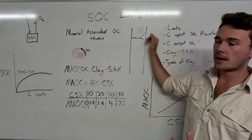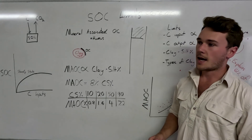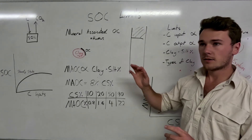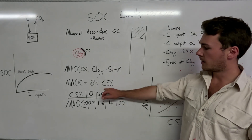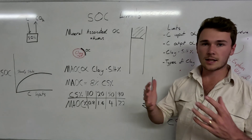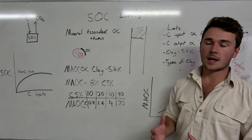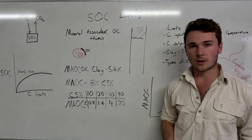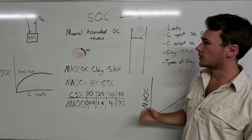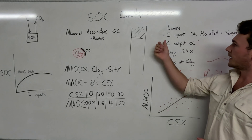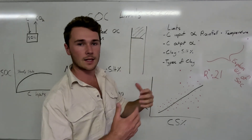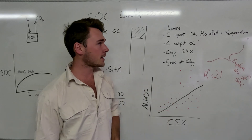Does it really matter if we max out the top layer when we have this capacity to sequester carbon deeper into the soil? We are limited by the actual soil organic carbon we can fix — roughly 8% of clay and silt content as a rule of thumb — but also by depth, which is limited by how deep roots go. By improving soil structure and airflow into deeper parts of the soil using cover crops and better microbial management, we can sequester more carbon lower into the profile. Carbon inputs are also limited by rainfall and temperature.